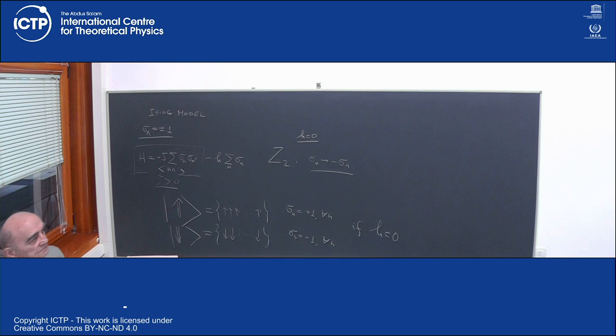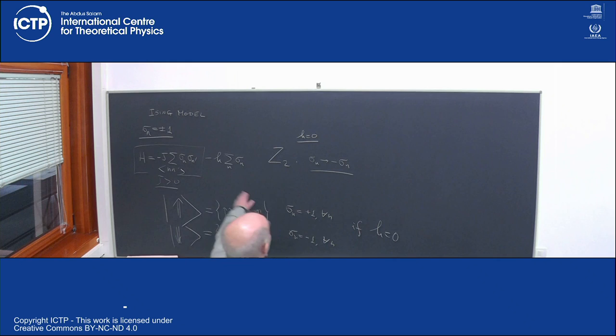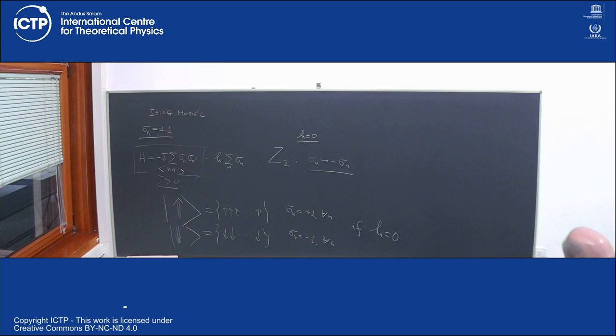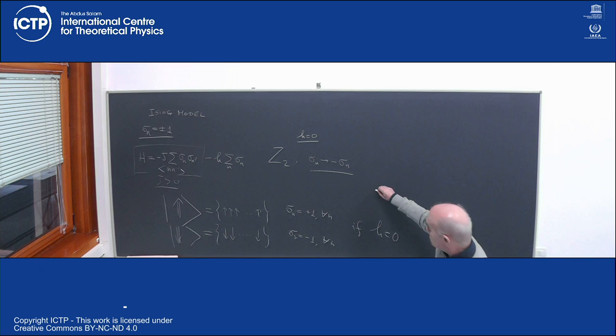Already at this level you can observe something really interesting. When the magnetic field is absent, this symmetry is intact, meaning the Hamiltonian doesn't change its value if I take a configuration and build a new one in which all the spins are overturned. The configurations come in pairs — if I have an energy level, I have exactly two configurations with the same energy, guaranteed by the Z2 symmetry.